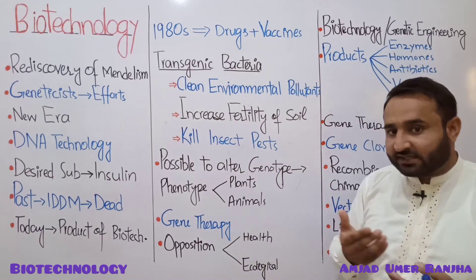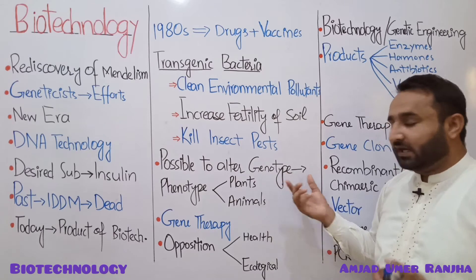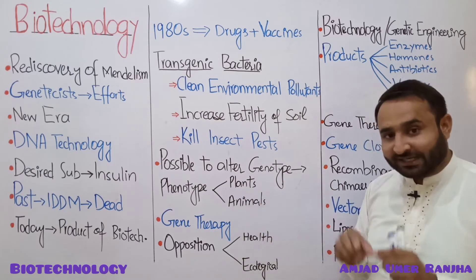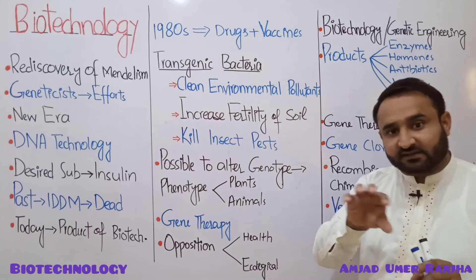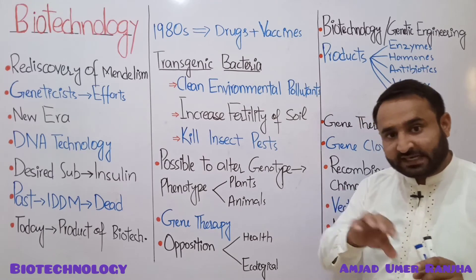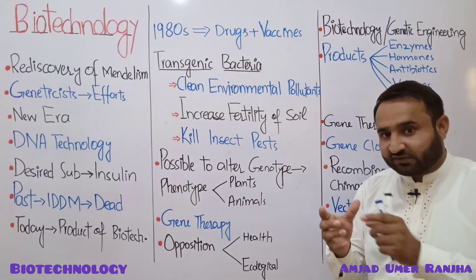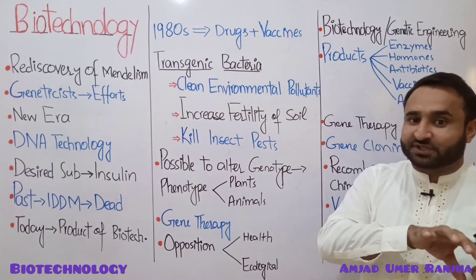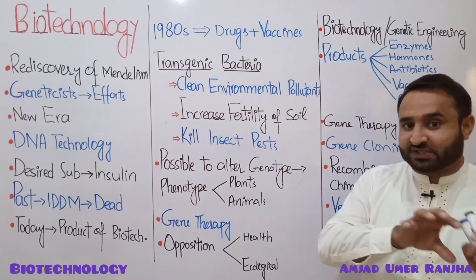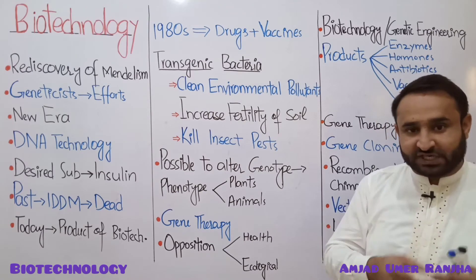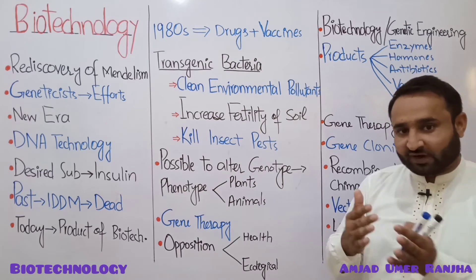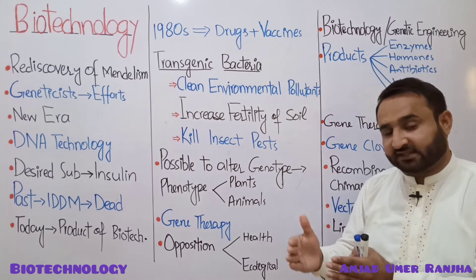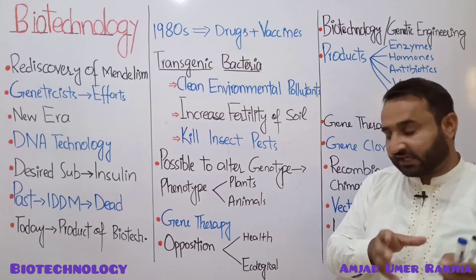Beyond bacteria, it is also possible to change the genes of other living organisms such as plants and animals — to change their genotype. And when the genotype changes, naturally the phenotype also changes — the way of expression of genes, i.e., the phenotype, also changes. So transgenic plants and transgenic animals have been and can be produced.